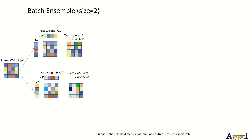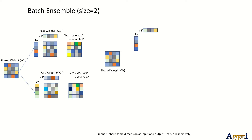Now coming to the Batch Ensemble — this is a very interesting approach. Here they have a shared weight, and for each ensemble member they don't have the full weight matrix. Instead, they define rank-1 vectors from which weight matrices are derived for those ensemble members. First you have a shared weight W, and then for each ensemble member you define rank-1 vectors. These rank-1 vectors r and s share the same dimensions as the input and output, m and n, corresponding to the layer dimensions of a deep MLP.